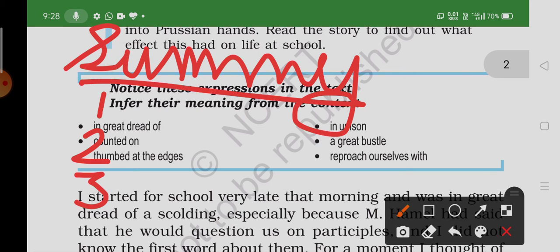The bulletin board was a notice board for the latest news and communications. It was the source of all bad news: lost battles, the drafts, and orders of commanding officers.